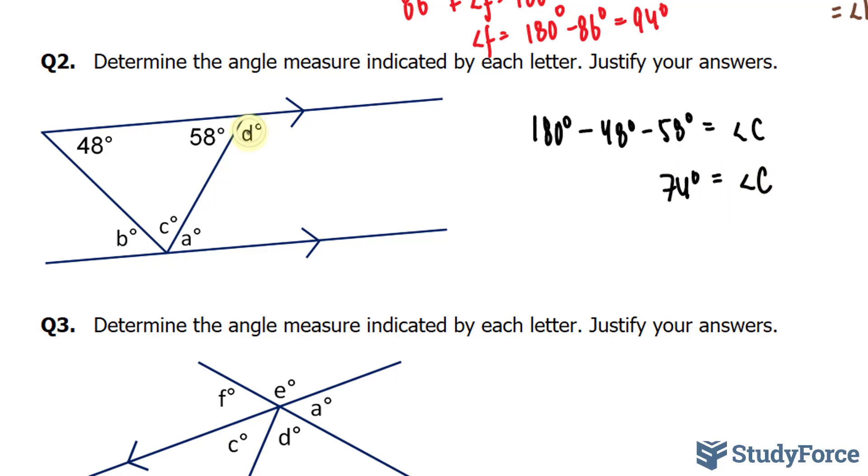Another thing that you can do is find angle D. Take a look. 58 and D are supplementary angles. Adding them up will give you 180 degrees. So if I set up a simple equation where I take 180 degrees and subtract it from 58, I'll end up with what angle D is equal to. And that is 122 degrees.